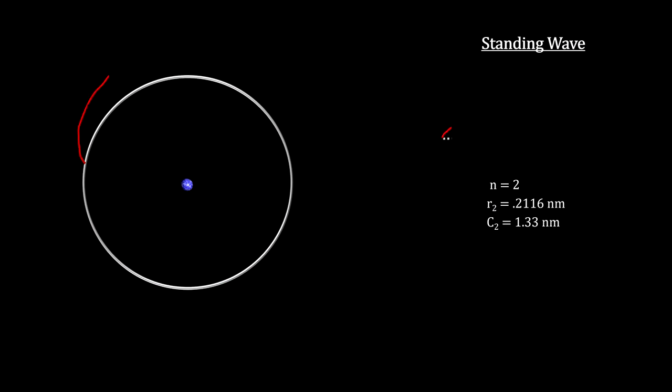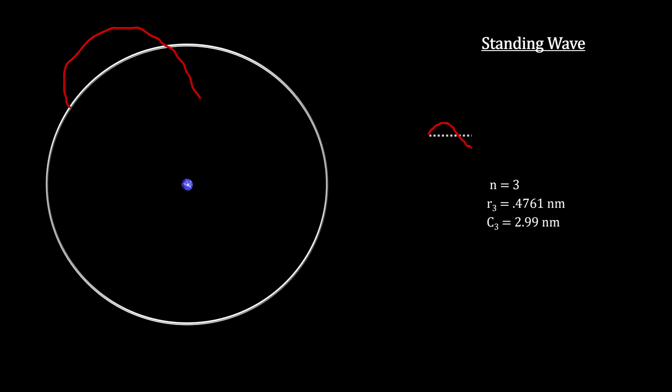The second shell would have to have the radius that creates the circumference that exactly fits two wavelengths. The third shell would have to have the radius that creates the circumference that exactly fits three wavelengths, and so on.